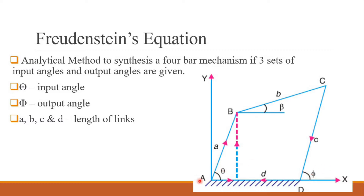Here we consider a 4-bar mechanism A, B, C and D with theta as the input angle and phi as the output angle. The length of AB is A, BC is B, CD is C, and AD is represented as D, where AD is the fixed length.